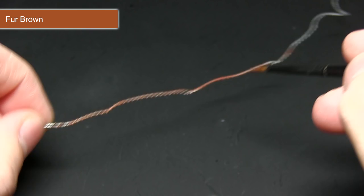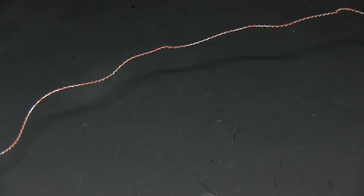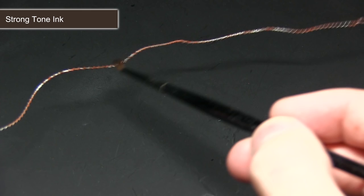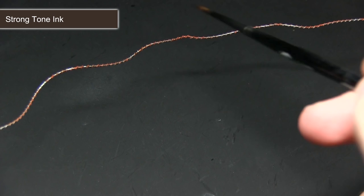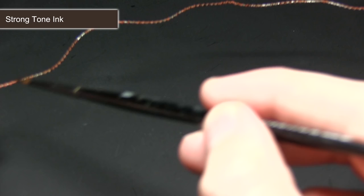With the Fur Brown applied, we have this nice rusty, non-uniform appearance. Now we want to continue the dirt and grime, so I'm using the Strong Tone ink and applying this over the surface of the barbed wire. You can see it's darkening the color already. We're going to apply this over the entirety of the wire. If you have the Quick Shade in the tin, you could dip the whole thing, but if you just have the normal ink in the pot, you can apply it with a brush.